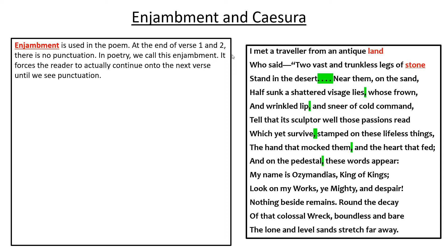Enjambment actually forces me to continue reading to the next time I see punctuation. Enjambment is when at the end of a verse there is no punctuation. In this poem, enjambment is present at verse 1 ('land'), verse 2 ('stone'), verse 5 or 6 ('red'), and near the bottom at verse 12 and 13 ('decay' and 'bear').